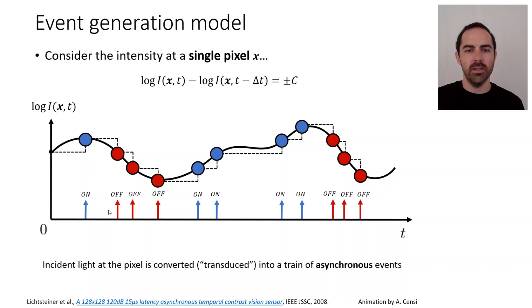What happens is that the continuous signal, the light that arrived at the pixel, has been converted, has been transduced into a train of asynchronous events. The information that was in this black signal has been converted into the interspike times of the events. So that's how each pixel in the event camera works.